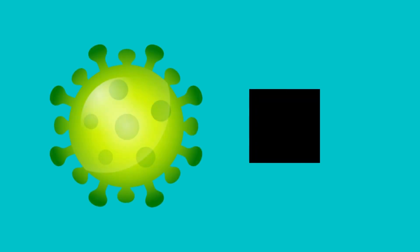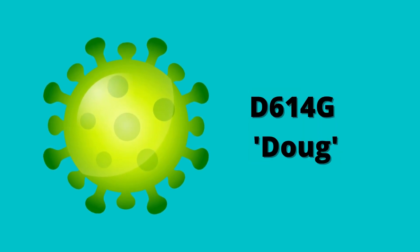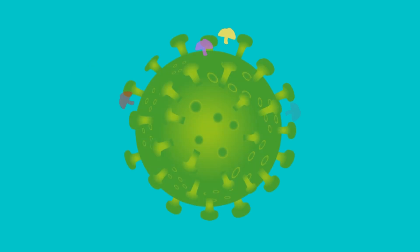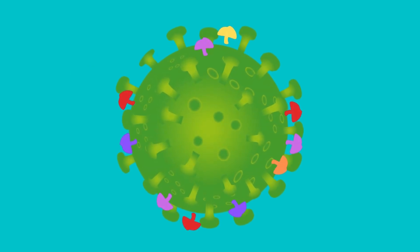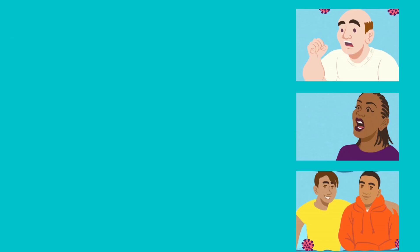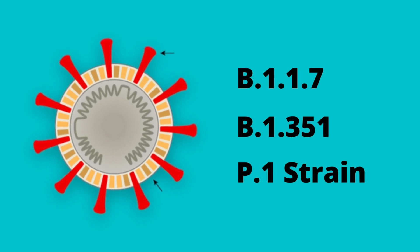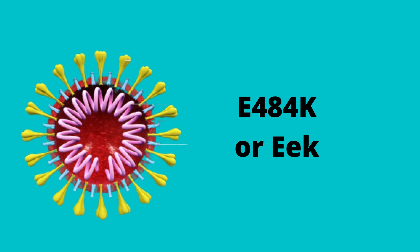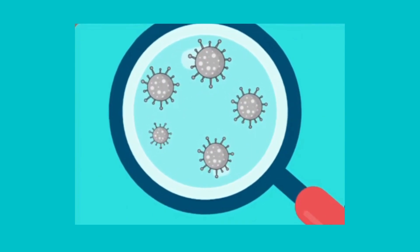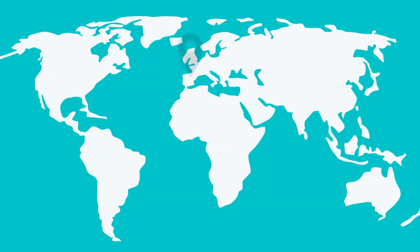For example, the D614G mutation. N501Y, known as Nelly, is another spike protein mutation which appears to be associated with increased transmissibility. This mutation has been detected in B.1.1.7, B.1.351, and B.1 strains. The other variant, E484K, has also been spotted in variants detected in South Africa and Brazil. Some lab studies have shown that it could evade some virus-blocking antibodies, while trials in South Africa showed that the variant reduced the efficacy of several vaccines.